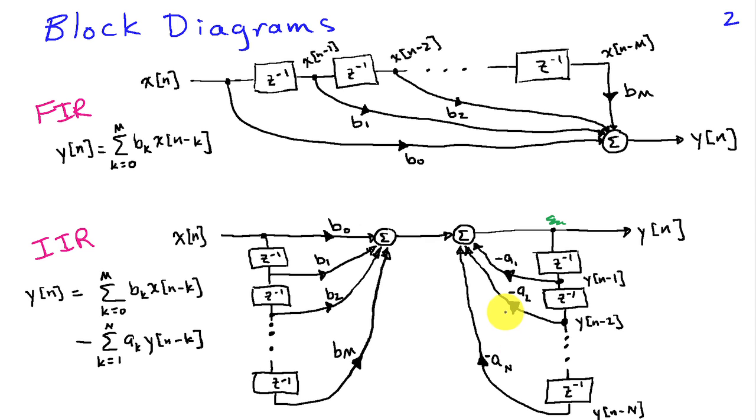This is one way to implement this system using two sets of memory banks storing past values of x and past values of y. It turns out that you can actually manipulate these block diagrams in very systematic ways and come up with more efficient ways of representing these systems, especially with respect to memory storage. But that's a topic that will be explored in another lecture.